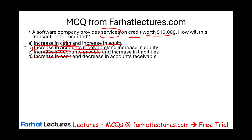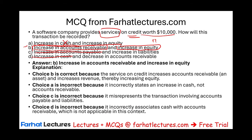The answer is increase accounts receivable and increase equity. The equity portion we haven't fully defined yet — we'll cover that in the next session. The key takeaway from this question is: can you identify accounts receivable? Accounts receivable occurs when you perform work and the other party doesn't pay immediately — they promise to pay in the future. When they promise to pay, you have an accounts receivable. And although you didn't get cash, you can increase your revenue now.